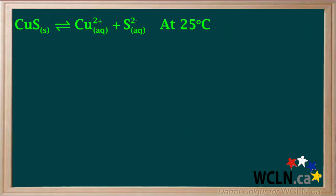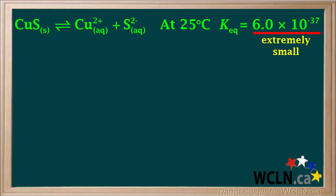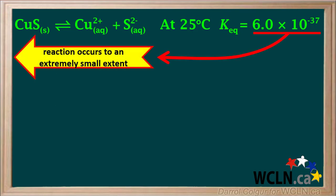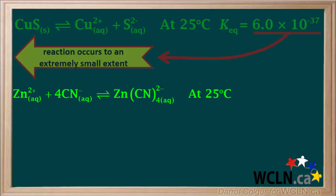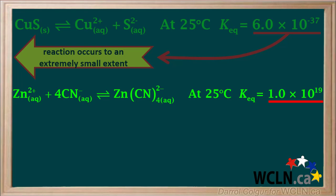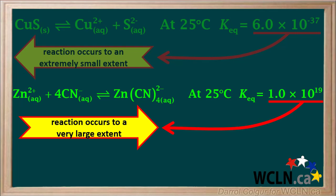For example, the dissociation of CuS solid into its aqueous ions at 25°C has a KEQ value of 6 × 10⁻³⁷, which is extremely small, so this reaction occurs to an extremely small extent. In another example, the reaction of zinc and cyanide ions to form the complex Zn(CN)₄²⁻ has a KEQ value of 1 × 10¹⁹ at 25°C — a very large value, meaning this reaction occurs to a very large extent.